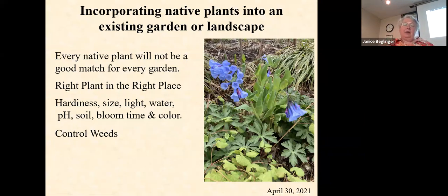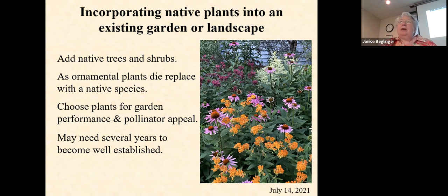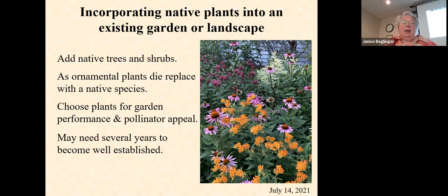We don't want to have a messy garden. We don't want our neighbors to perceive that all of our native plantings are going to be weedy, so we do want to control the weeds in them. We can also add those native trees and shrubs as our ornamental plants die — think about replacing them with native species. We also want to choose plants for garden performance as well as pollinator appeal. And just like our garden plants, many of our native plants will take several years to become established. Milkweed will take a couple of years; it's very slow to establish. With native plants, it's still: first year they sleep, second year they creep, third year they leap.